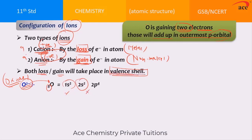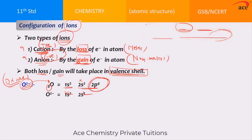Remember, loss or gain of electrons is related to the valence shell. Shell 1 is referred to as the K shell and shell 2 is referred to as the L shell. The valence shell is not filled, so the electrons should enter into 2p. This 2p⁴ will become 2p⁶, and by gaining 2 electrons it gets the configuration of neon, which is an inert gas, making it more stable.